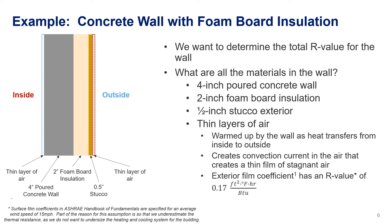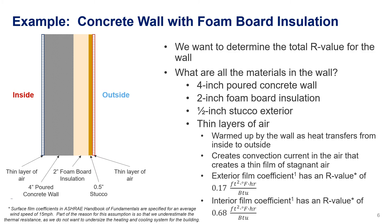Likewise, on the inside of the wall, we have the same thing, except in this case that inside layer will get colder than the indoor temperature and air tends to fall down. And again, it creates this kind of layer along the surface of the wall. Because we don't have the wind impact on the interior, that resistance is a little bit higher — it's 0.68, with the same units as the exterior film coefficient. We'll call this the interior surface film coefficient, or interior film coefficient for short.